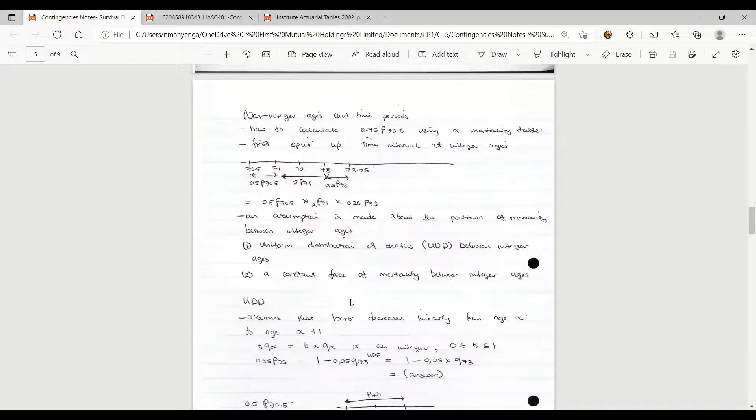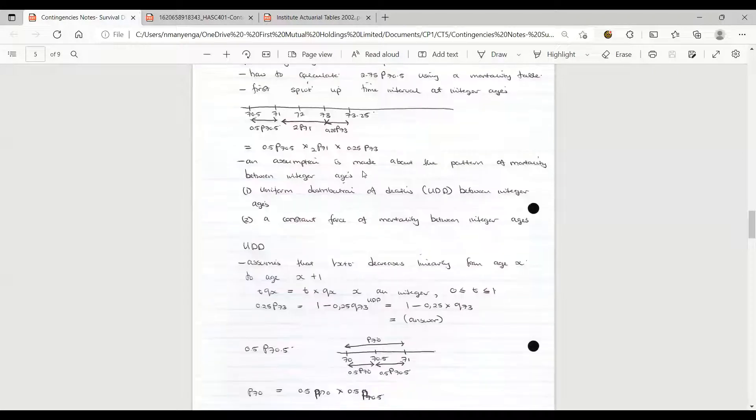We are now looking at non-integer ages and time periods. For example, if you're asked to calculate the probability of a person aged 70.5 years surviving up to 2.75 years using the mortality table, you are not able to evaluate this kind of probability. You'd first have to split up the time interval at integer ages. I tried to illustrate drawing a timeline. I've split the time ages into integer ages.